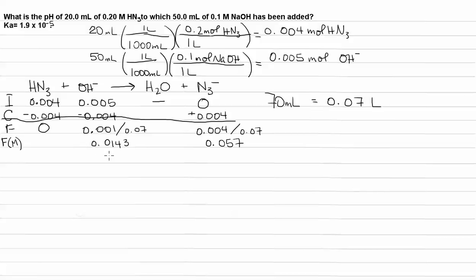But what is it? It's a base. We have excess strong base hydroxide. Excess strong base hydroxide is going to govern our pH. We have a little bit of weak base, N3 minus. But this is not going to change our pH nearly as much as our hydroxide is going to. So, we know what the concentration of our hydroxide is. It is 0.0143 molar.